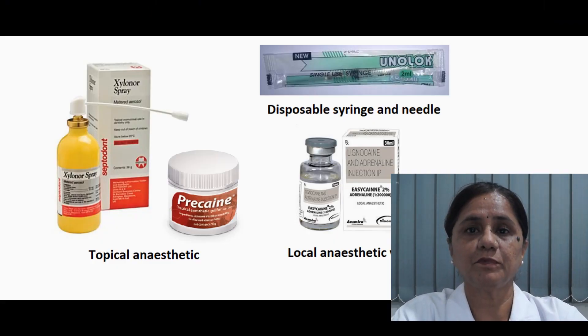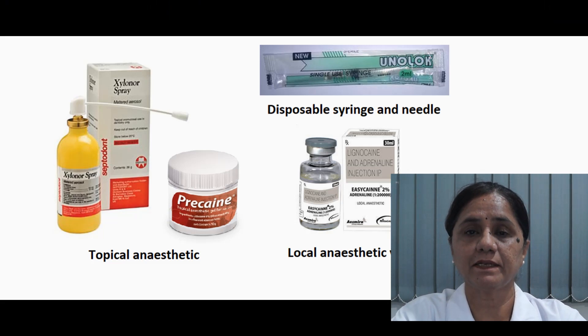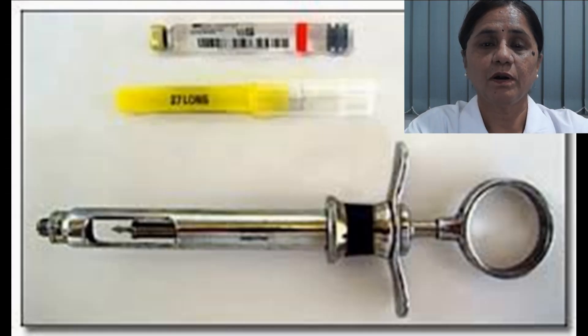In this section we deal with the armamentarium used for inferior alveolar nerve block technique. The armamentarium used in local anesthesia in dentistry remains the same, and the basic components include topical anesthetic, disposable needle and syringe, and the anesthetic vial or cartridge. Alternatively, a self-aspirating plunger and needle system can also be used. Here we are using a disposable syringe needle system.